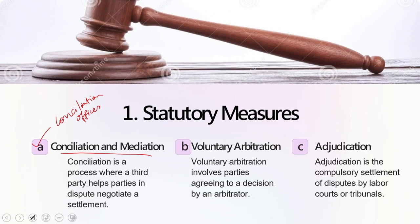Conciliation and mediation happens through either the conciliation officer, who works in the department of labor, or the conciliation board — a body of several members consisting of a chairman and 2 to 4 members as representatives of employers and employees, appointed by the authority. The conciliation officer is required to hold proceedings and carry out investigations regarding the dispute in a fair manner. If the report is not in favor, the matter can be sent to the board of conciliation or any other adjudicating body. If that step is not preferred, the government directly communicates the matter to the parties involved.